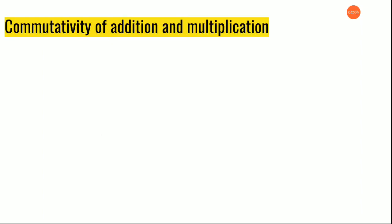First — commutativity of addition and multiplication. The word commutative is new for you, so let's see what it means. Commutative means exchanging — you are giving something and taking something in return. Suppose I ask you to exchange places and sit; you will move to the other person's place and that other person will come to your place.